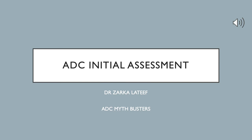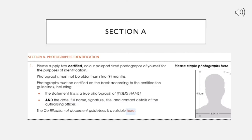These were some important points — all of this has been written in the initial assessment form, so please read the entire form very carefully. Each and every detail has been provided in the form. Now, the first section is regarding photographs. I've already discussed this in my certification guidelines video, so I'll not be discussing more about it here. You just need to provide two certified photographs to ADC.